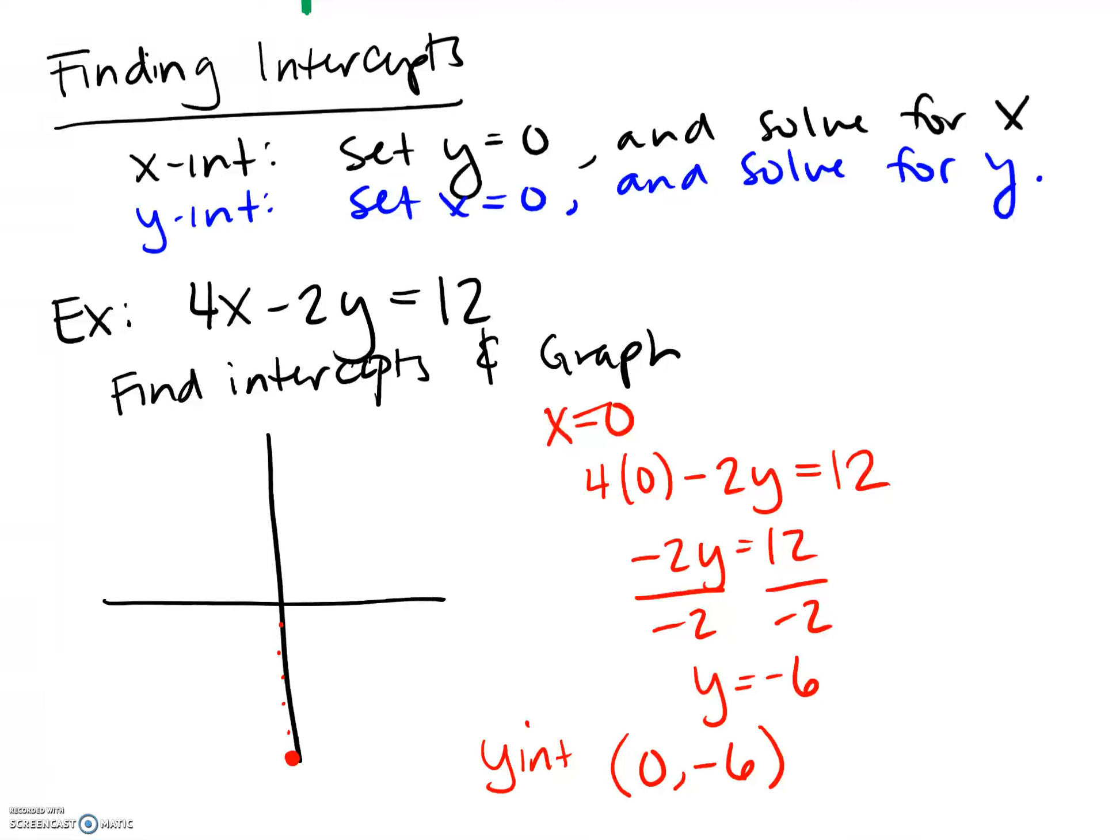And then to find the x-intercept, set y equal to zero. So 4x minus 2 times zero is equal to 12. 4x is equal to 12. You're realizing hopefully now that this me setting this equal to zero and actually writing this out is silly. I can literally just kind of cover this up and then solve the resulting equation. In fact, that's normally what I do when I have a whiteboard and I can put my finger over it. I cover up the variable that I'm setting equal to zero, that whole term. So when we finish this, we get x equals three. And then we have our x-intercept.